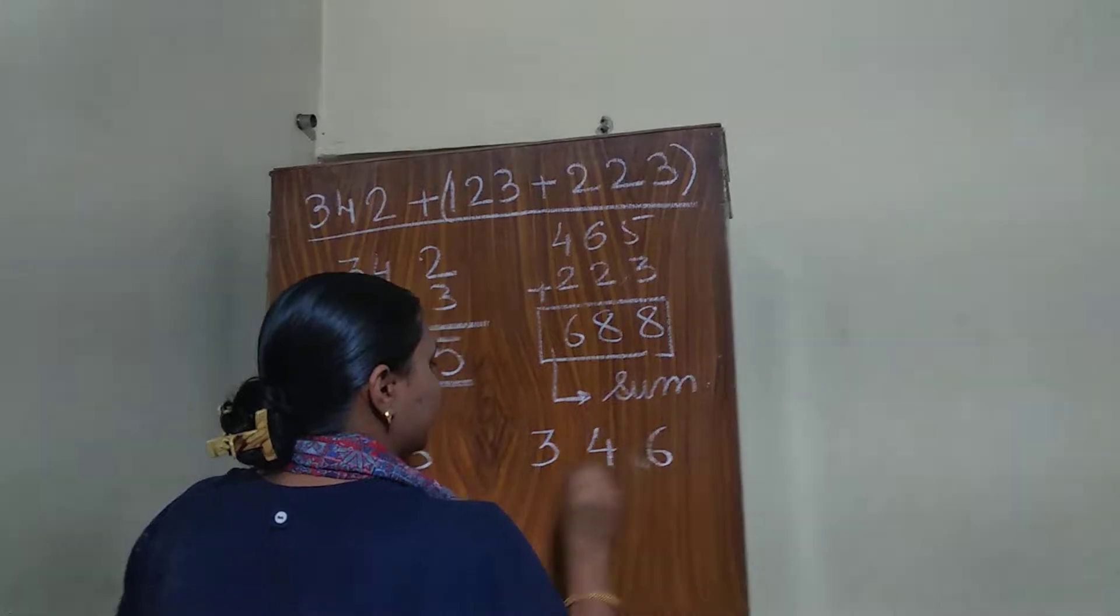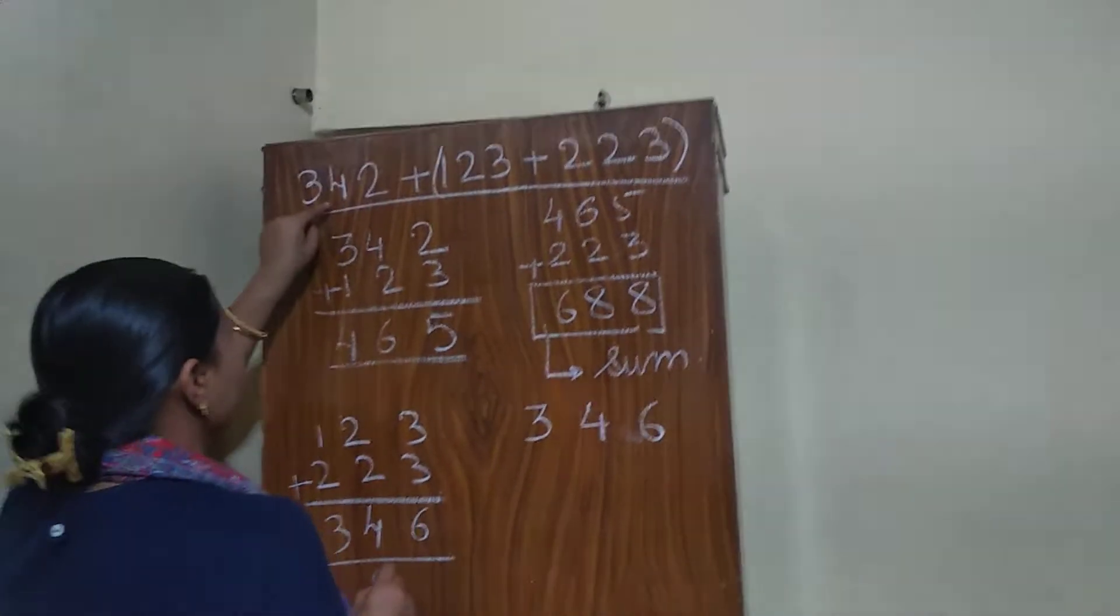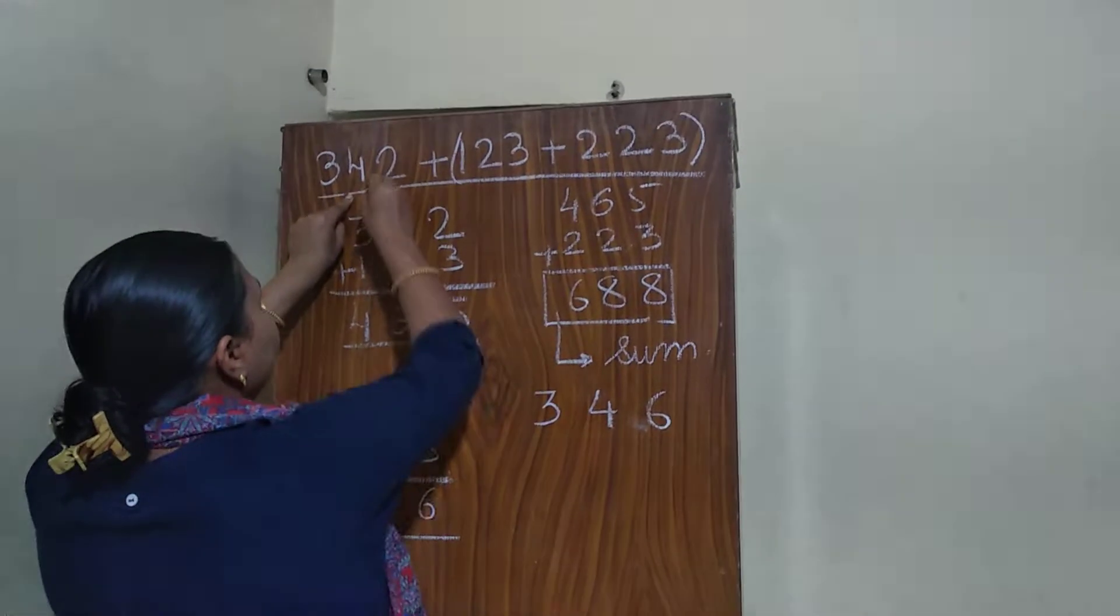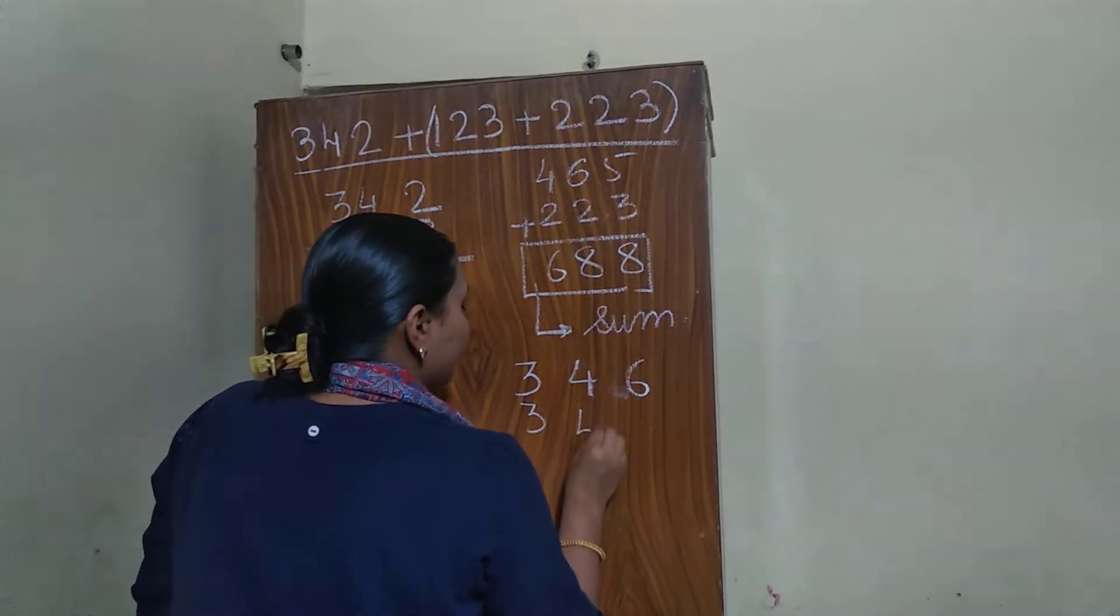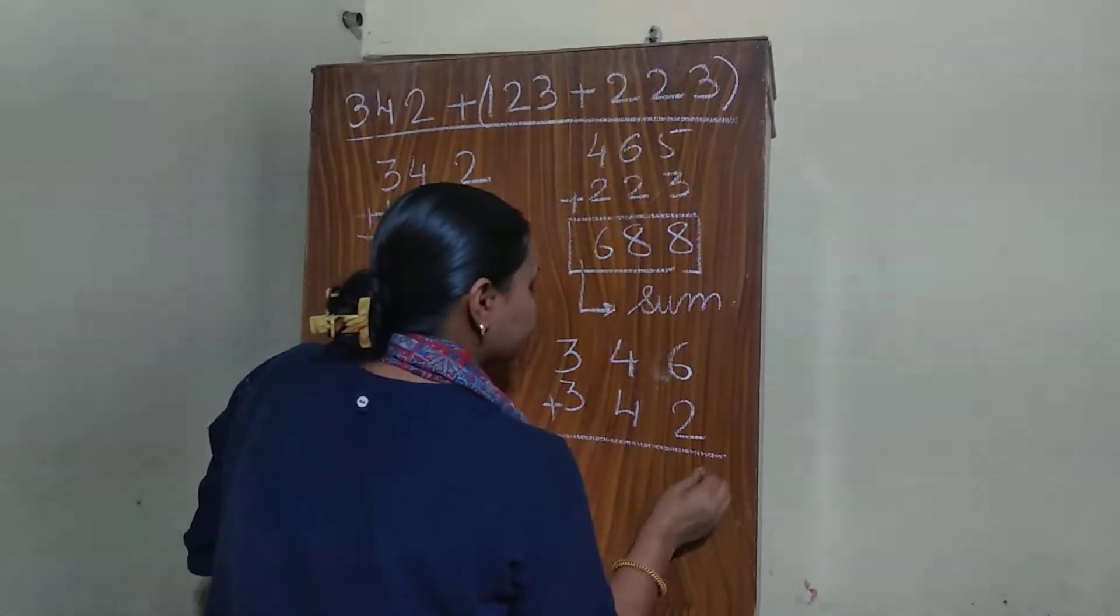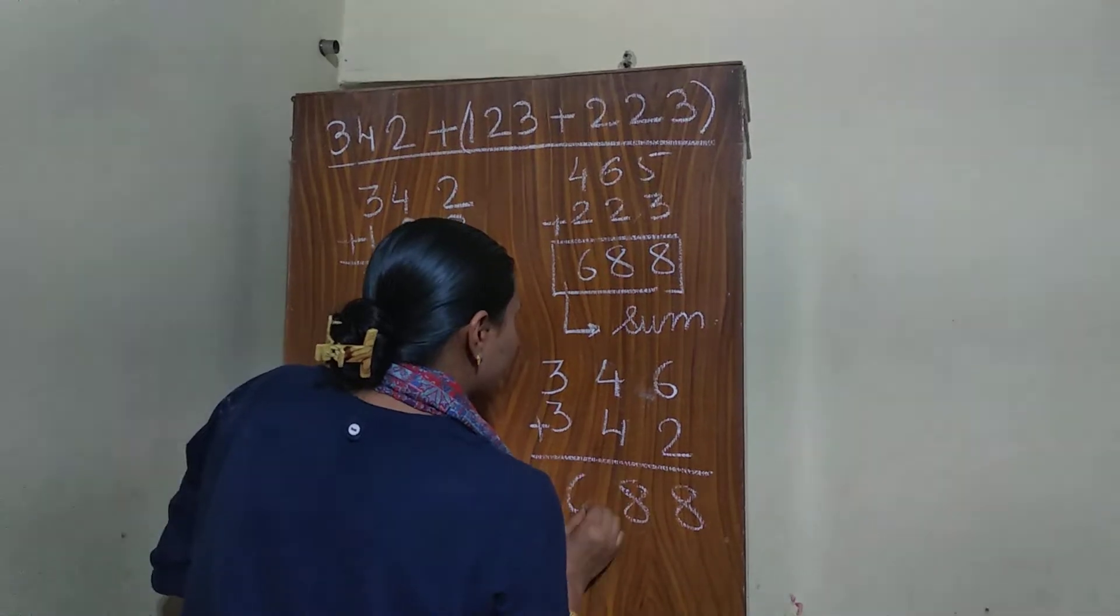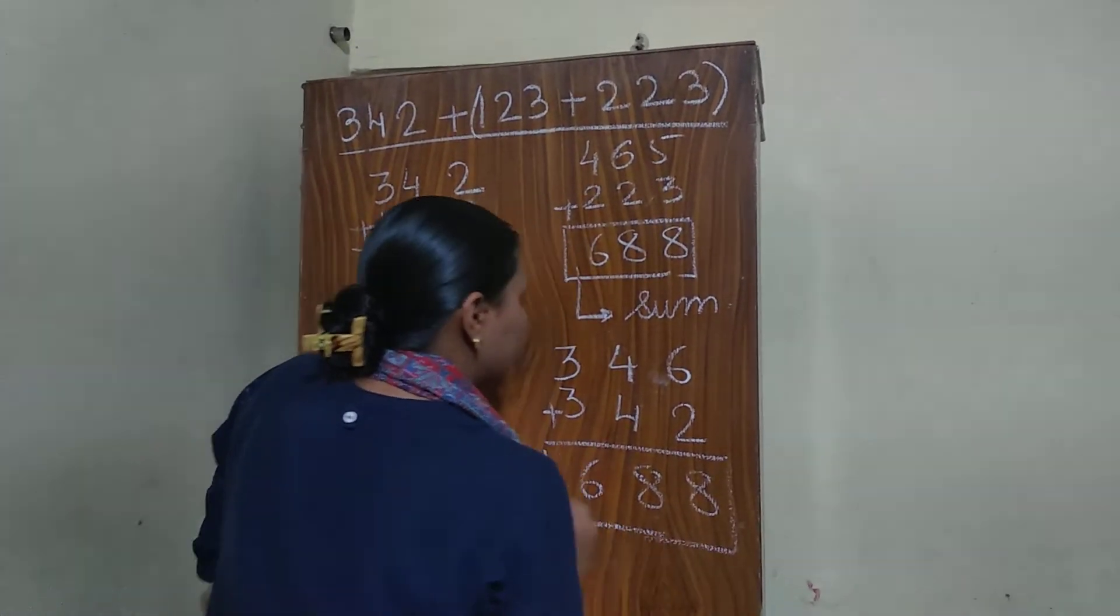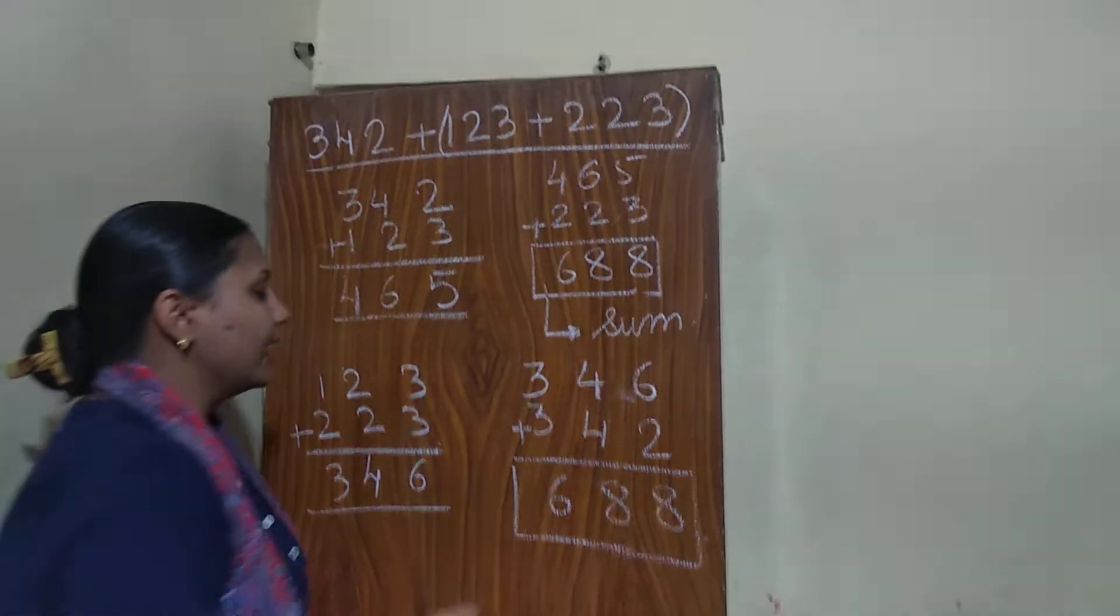I will take this 346, again, I will write this 346, and one more number is here, 342. Addend. Again, see children, that 688 is the answer,